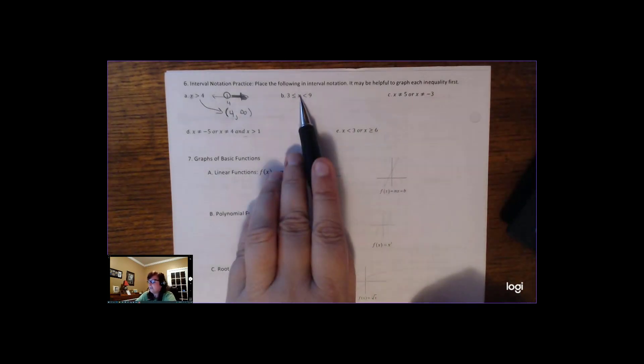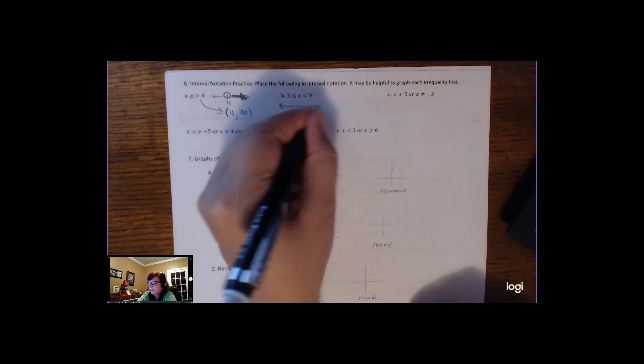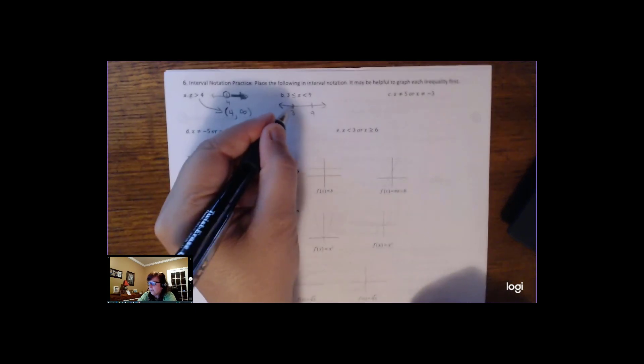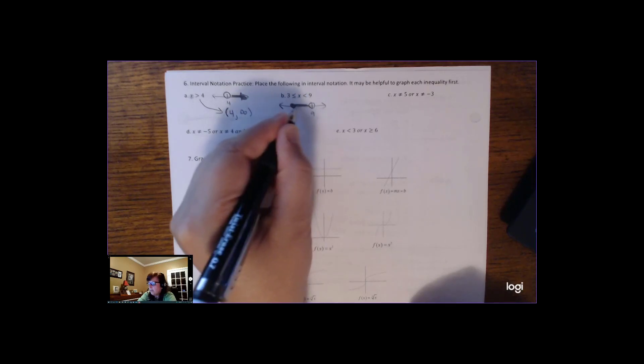Alright, this one is saying that x is between 3 and 9, all the numbers between 3 and 9, and we're including 3, but not 9. So the graph of this, you'd have a 3 and a 9, and you would have a colored circle on the 3, but an open hole on the 9, and all the numbers in between.